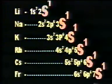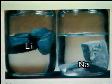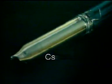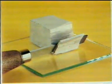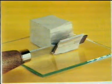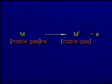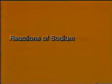Group 1 metals are called the alkali metals. All are soft and silvery in color, though cesium has a golden yellow cast. Because of their large ionic radii, these metals have low densities and are soft. They are very reactive and readily form M+ ions with the noble gas configuration.